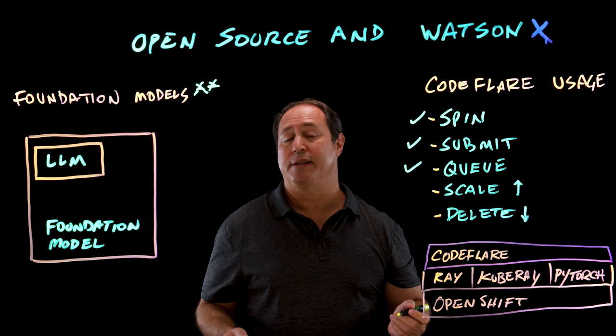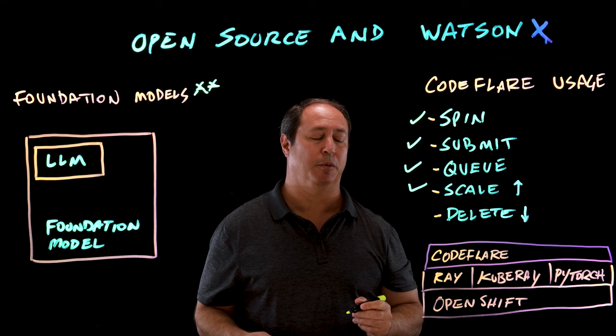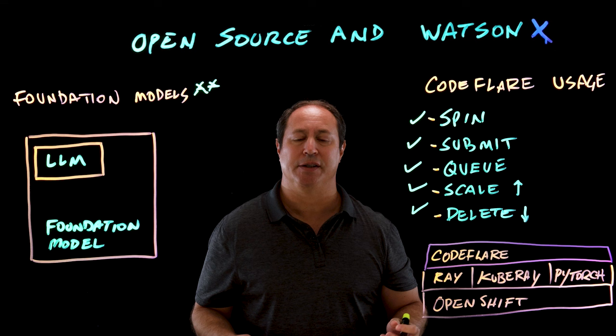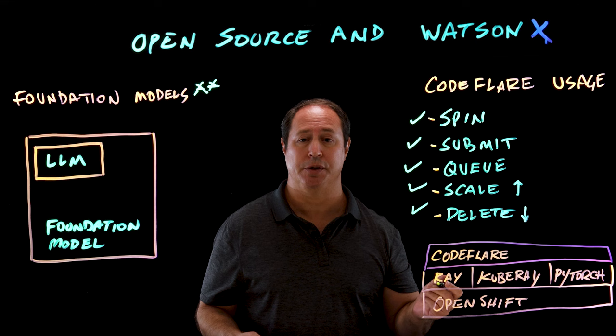If the OpenShift cluster is heavily used and there aren't resources available, CodeFlare is able to queue the jobs and wait until resources are available. In some cases, if the cluster is full, it can actually be scaled up. When all the training and validation is done, it can delete the Ray jobs and take them off the cluster. CodeFlare enables the data scientist to efficiently use a cluster — or in some cases multiple OpenShift clusters — without worrying about the infrastructure underneath.